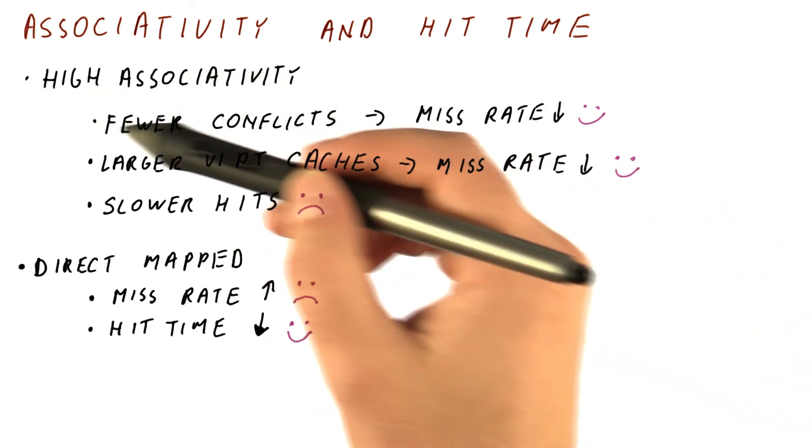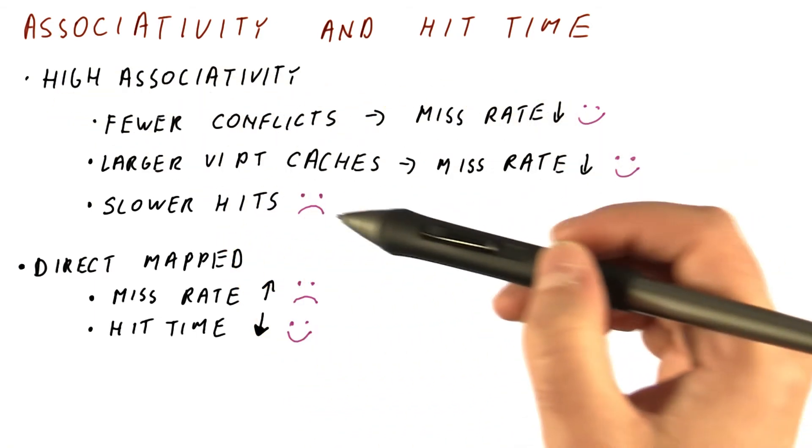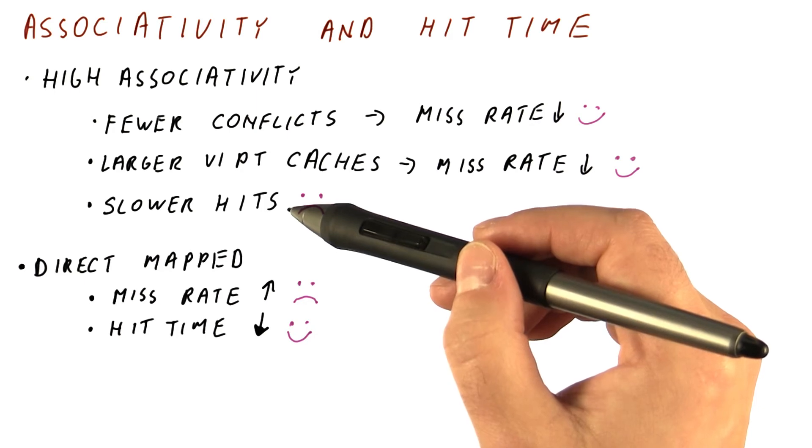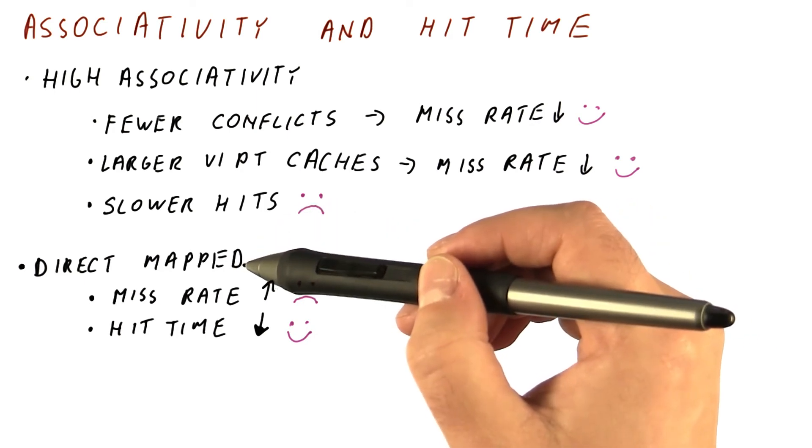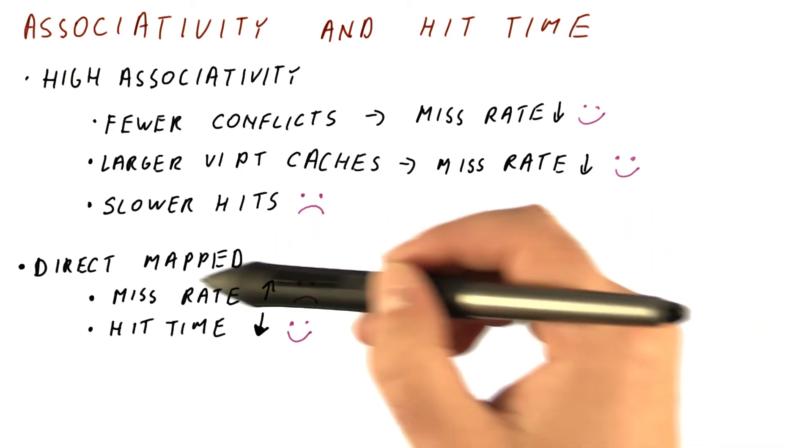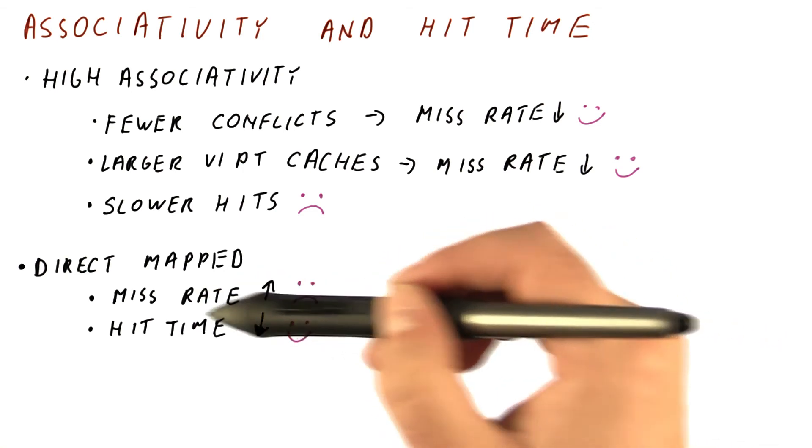So we can see that high associativity in a cache improves the miss rate but makes the hit time worse, while simple direct-mapped caches sacrifice the miss rate to improve hit time.